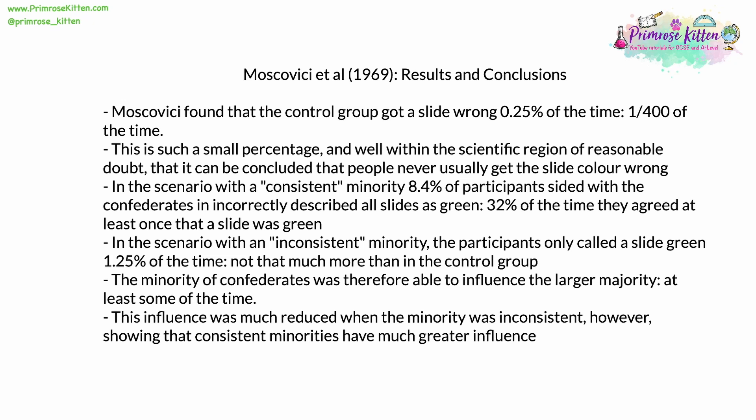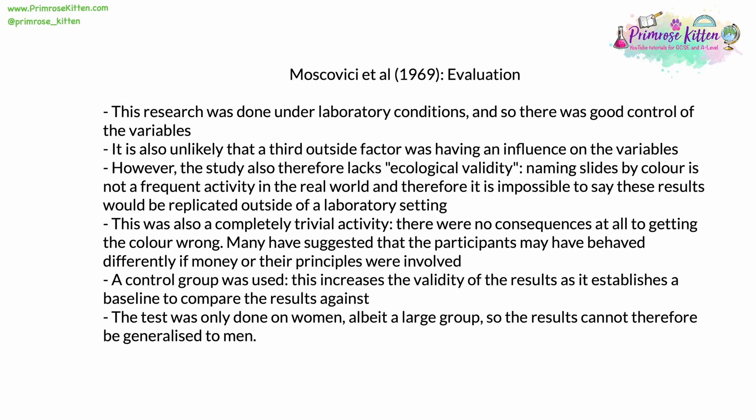The minority of confederates was therefore able to influence the larger majority, at least some of the time. But this influence was vastly reduced when the minority was inconsistent, showing that consistent minorities have a much greater influence than inconsistent ones. When evaluating this 1969 research by Moscovici, one point to consider is that it was done under laboratory conditions, meaning good control of variables and the ability to establish a cause-and-effect relationship. It is also unlikely that a third outside factor was influencing the results.